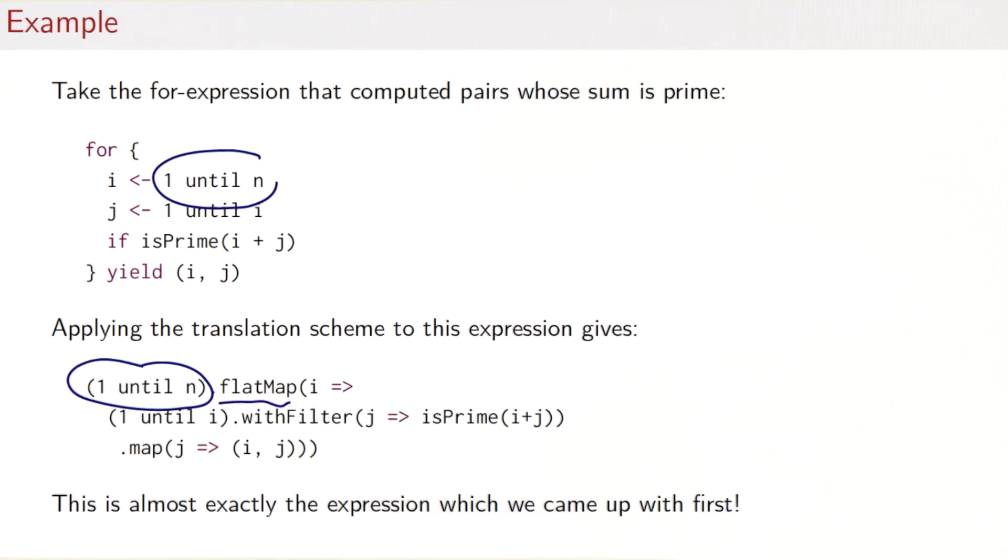The nested for expression would take the generator one until i, that's the one here. That is followed by a filter, so we have the filter here with a call to withFilter and the call to the isPrime predicate. And finally the whole thing gets mapped to a map where we form the pairs.